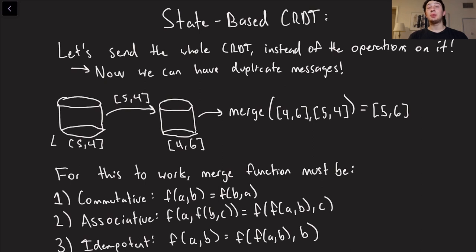Then in a state-based CRDT, as opposed to just applying one operation to our local CRDT, we call this merge function right here. And so on the right leader, we're going to be merging our local CRDT with the incoming state-based CRDT. And via this merge function, we now have a new result. So after receiving 5,4, the right database merges and changes itself to 5,6.